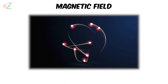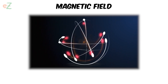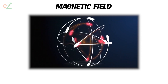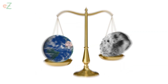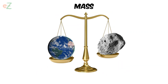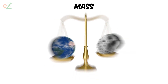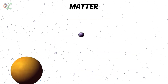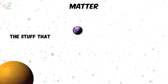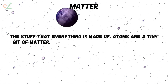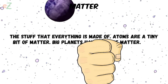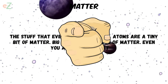Magnetic field. The space around a magnet where the magnetic force is active. Earth has a magnetic field and its extension into space helps protect us from space weather. Mass. The amount of matter something is made of. Matter. The stuff that everything is made of. Atoms are a tiny bit of matter. Big planets have lots of matter. Even you are made of matter.